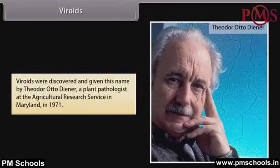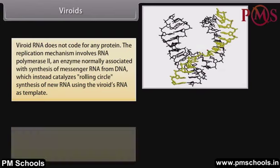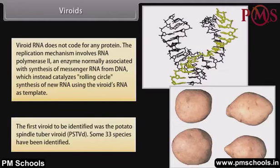Viroids were discovered and given this name by Theodore Otto Diener, a plant pathologist at the Agricultural Research Service in Maryland, in 1971. Viroid RNA does not code for any protein. The replication mechanism involves RNA polymerase 2, an enzyme normally associated with synthesis of messenger RNA from DNA, which instead catalyzes rolling circle synthesis of a new RNA using the viroid's RNA as a template. The first viroid to be identified was the Potato Spindle Tuber Viroid (PSTVd). Some 33 species have been identified.